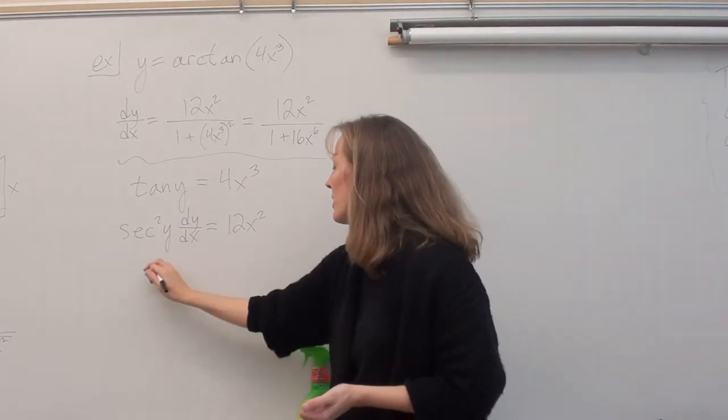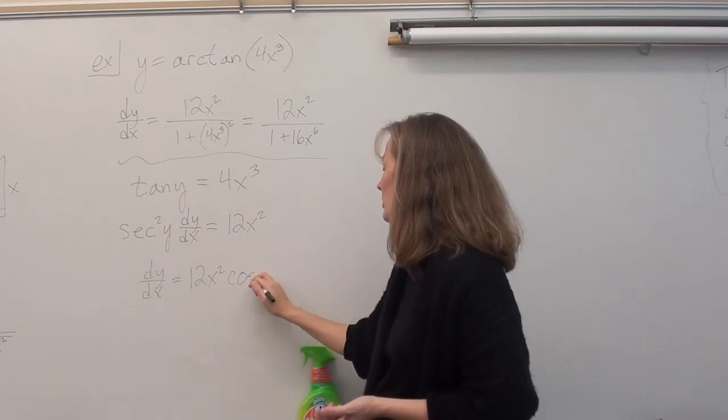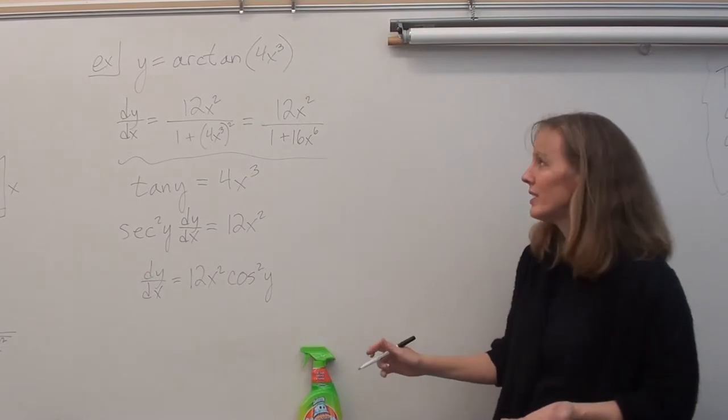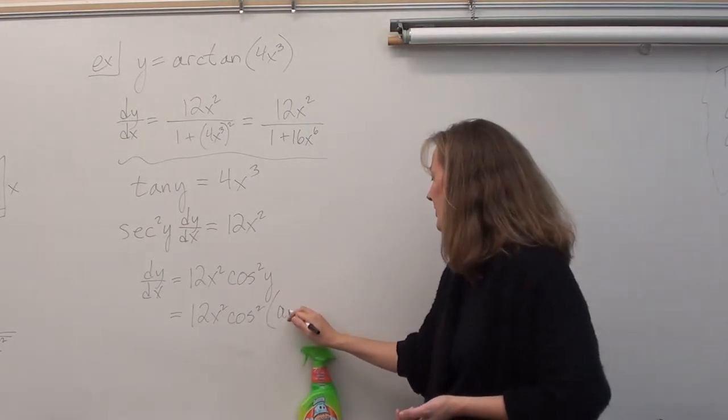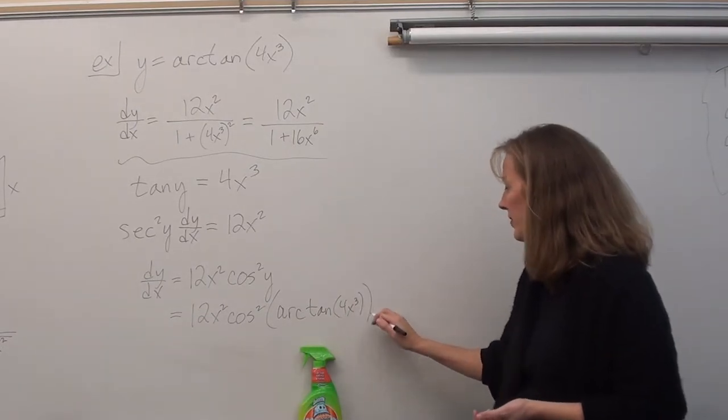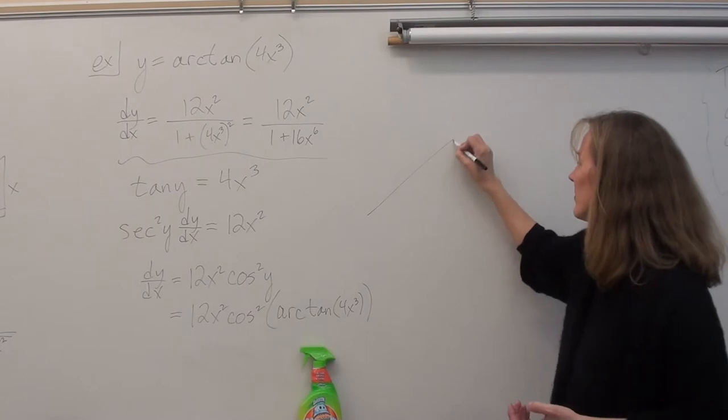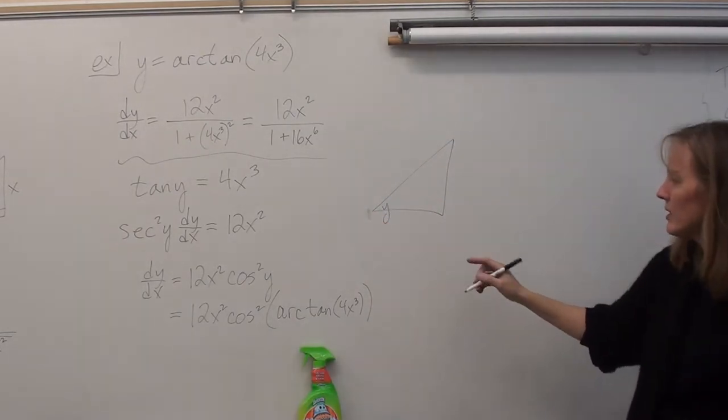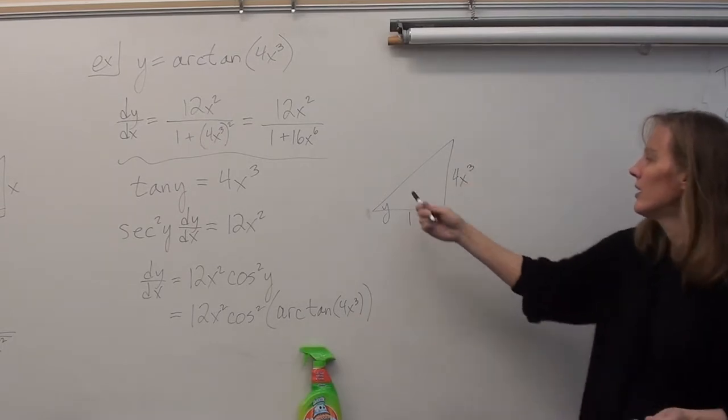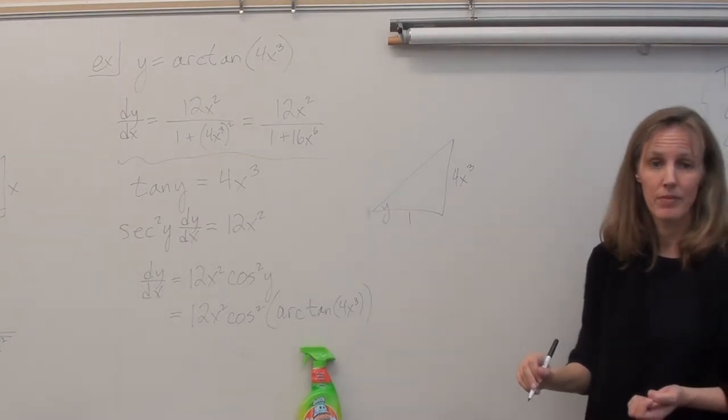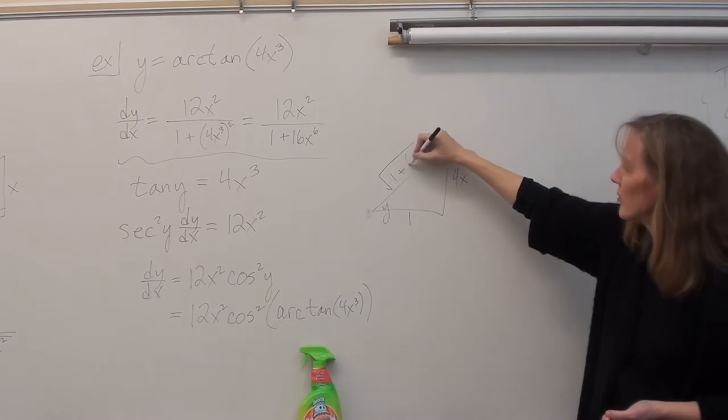So, dy dx equals 12x squared dividing by secant is the same thing as multiplying by cosine, right? So, times cosine squared y. What is y? It's the arctan of 4x cubed. What do I do now? Draw a triangle. So, let's see. This is the angle whose tangent is 4x cubed. So, I would have an opposite side of 4x cubed over an adjacent side of 1. What's the hypotenuse? Square root 1 plus 4x cubed squared.